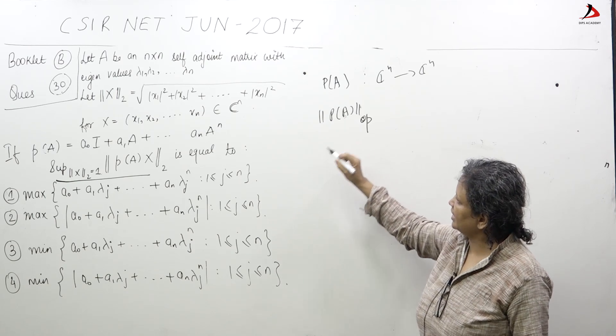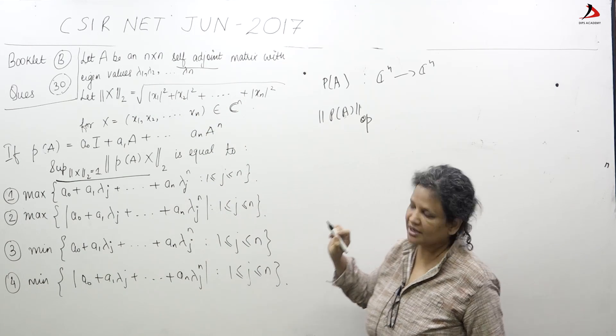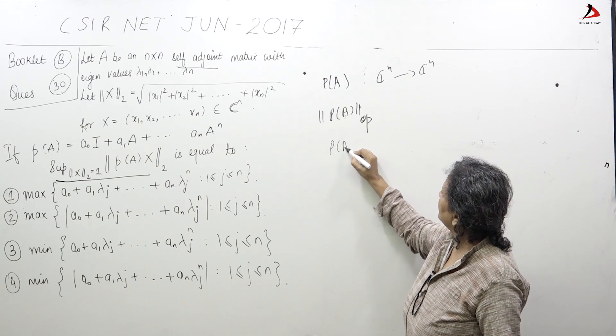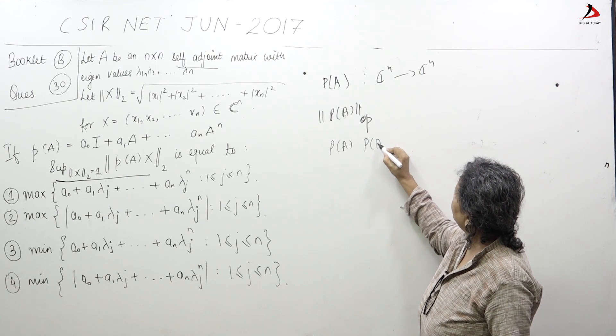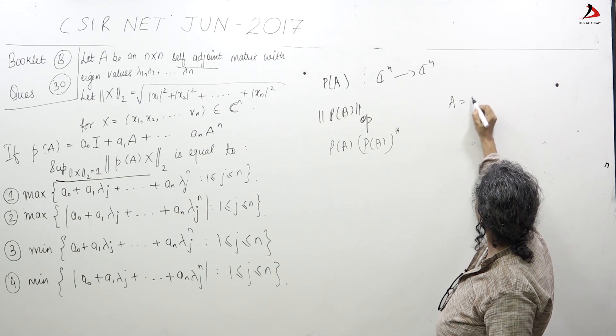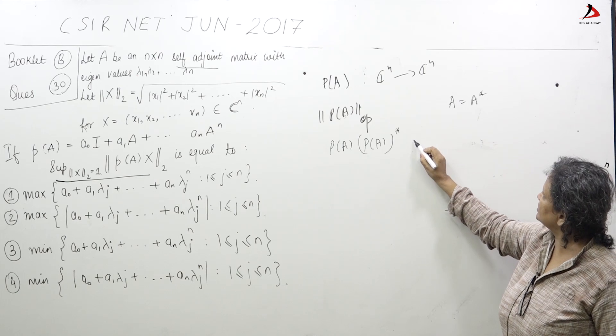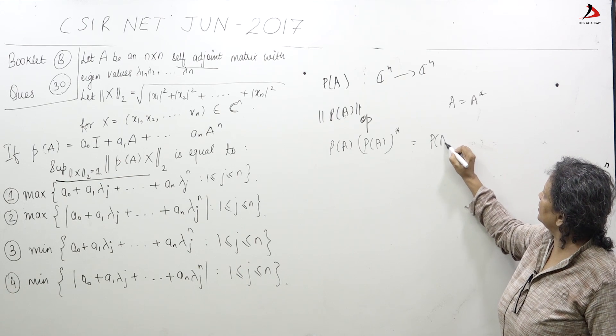Given also that A is equal to A star self-adjoint, so A equals A star. That gives you P of A into P of A star. Given A equals A star, that gives you P of A into P of A star is P of A.